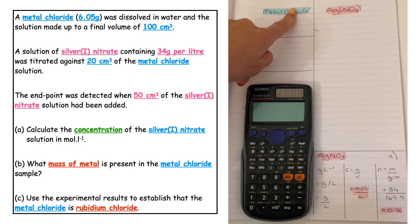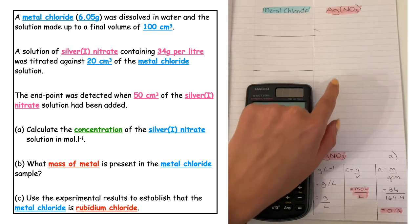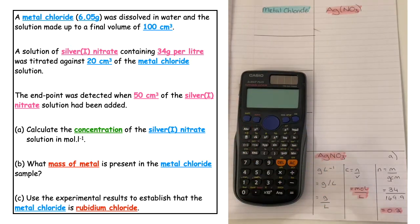For us to calculate the mass of metal chloride, we did a titration against the silver nitrate solution. So what we have to do is calculate the number of moles of silver nitrate solution that was titrated in the reaction.